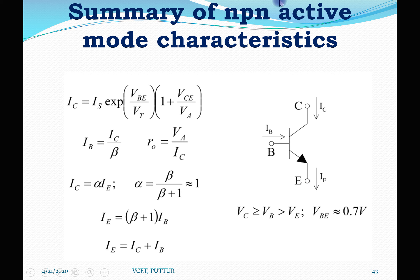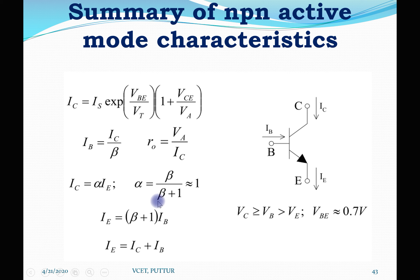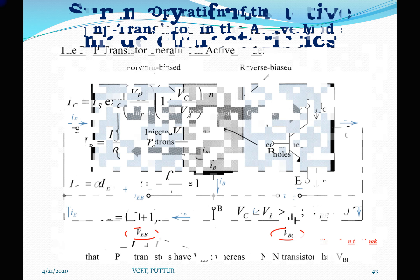The summary of NPN active mode characteristics includes: the IC equation in terms of VBE voltage, the IB equation, the output resistance R0 equation, IC in terms of alpha and IE, and IE in terms of IB. These are the NPN transistor characteristics in active mode.